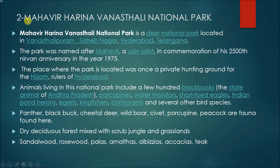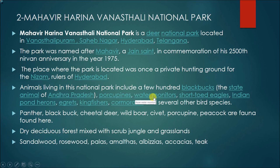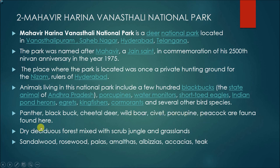If a question is asked which park is related to both Jain heritage and the Nizams, it is Mahavir Harina Vanasthali National Park. Animals living in this national park include black bucks, cheetal deer, wild boar, porcupines, water monitor, short-toed eagles, Indian pond herons, egrets, and kingfishers. The flora present is a mix of shrub jungle and grasslands with sandalwood, rosewood, and palash trees.